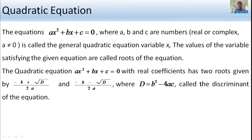The D value is the discriminant of the equation. The quadratic equation ax squared plus bx plus c equals 0 has two roots: x equals minus b plus square root D divided by 2a, and x equals minus b minus square root D divided by 2a.